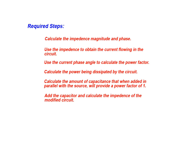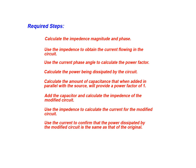Next we will add the capacitor and calculate the impedance of the modified circuit. We will use the impedance to calculate the current for the modified circuit. Lastly, we will use the current to confirm that the power dissipated by the modified circuit is the same as that of the original.